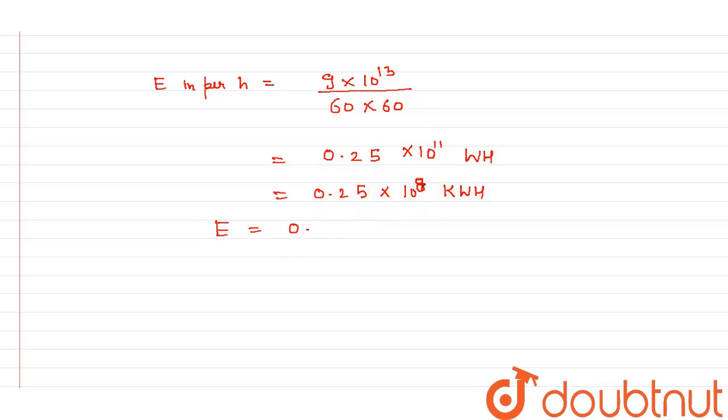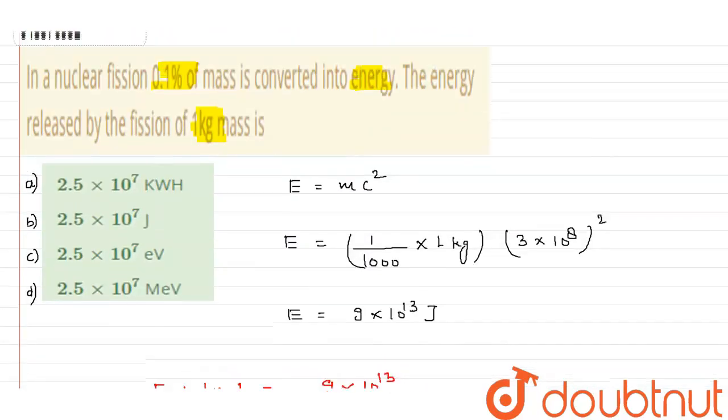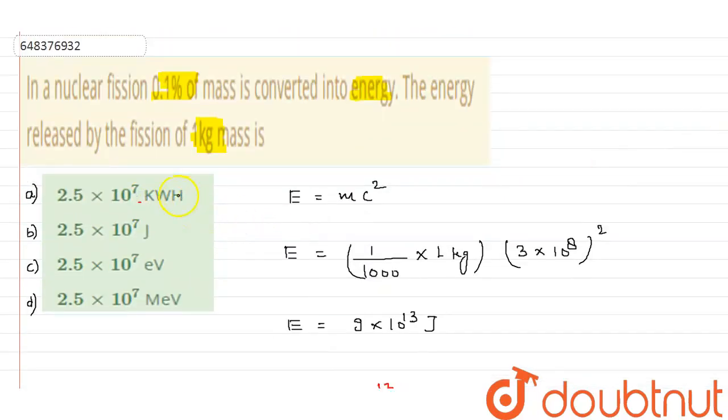This will be 8, so if I say multiplied with 0.1 here, you will get the value as 2.5 times 10 to the power 7 kilowatt hour.